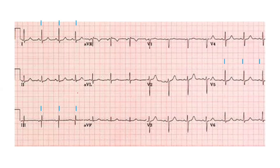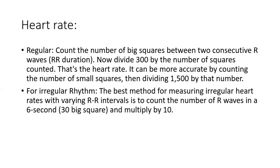For heart rate calculation, there are two methods for regular rhythm. The first method: count the large boxes between two R waves and divide by 300. The second method: count the small squares between two R waves and divide by 1500. Either gives the heart rate.